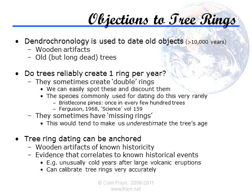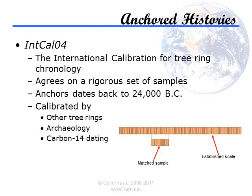We can also use carbon-14 dating methods to enhance these dates. For more on these methods, please see the earlier presentation on radiometric dating. IntCal04 is the calibration dataset generated by the International Calibration for Tree Ring Chronology. This agrees on a rigorous set of samples which anchors tree ring chronologies back to 24,000 BCE. It does this by building up a huge database of samples with overlapping chronological extents so that the youngest trees can be used as a foundation against which older trees can be matched, and then oldest trees still can be matched against the middle-aged ones, and so on. Tree ring histories are calibrated primarily by examining a large number of such samples and gaining a consensus for the age of each sample based on matching ring sequences against samples of known ages.